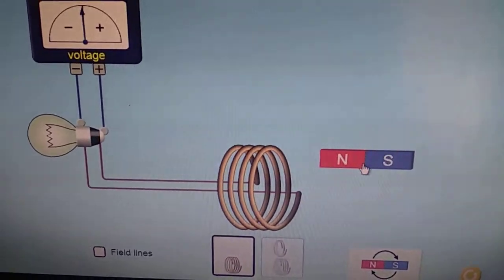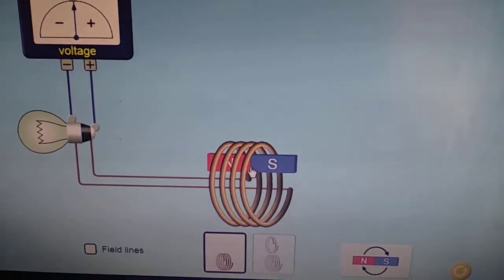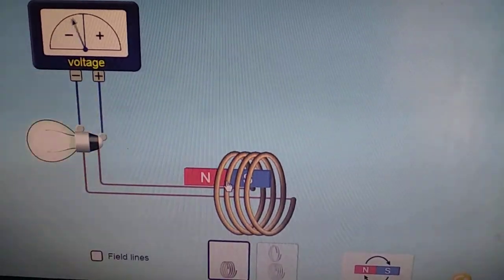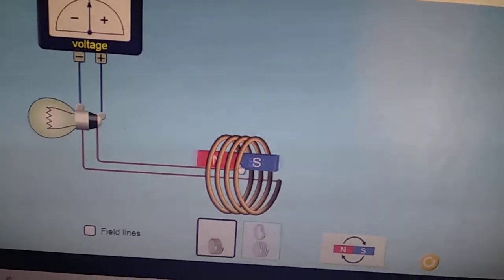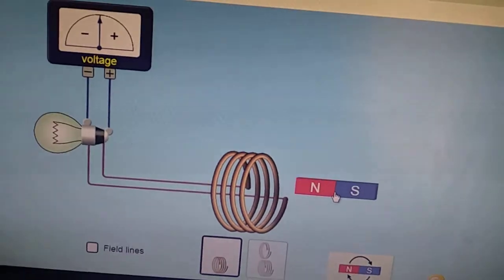Now see, we move the north pole of the magnet towards the coil, the flux changes and induced EMF is induced. You can see, whenever we stop, the bulb stops glowing. So, that means EMF lasts as long as the magnetic flux changes.